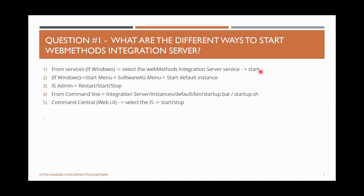Similarly you can stop it from there as well. Another way is, after installation on Windows, you can see it in the Start Menu as well. So you can go to the Start Menu, choose the SoftwareAG folder, and from there you can start the IS default instance. Also, you can log into your IS admin page from the browser, and once logged in, you will have the option to restart, start, or stop the instances.